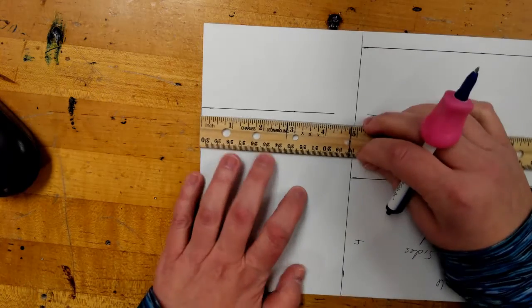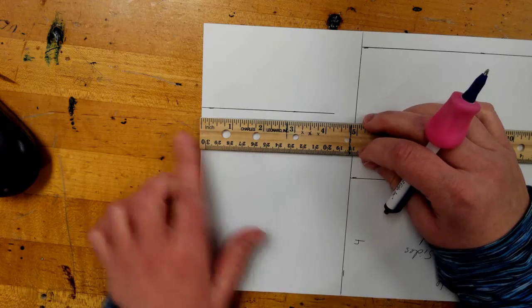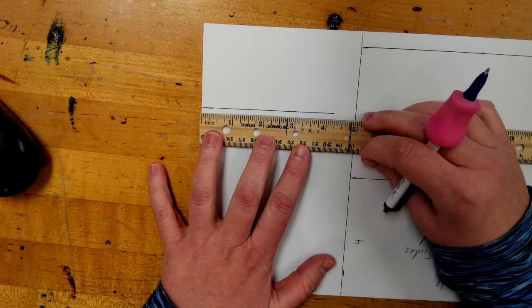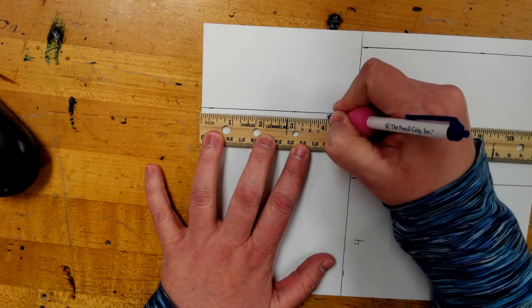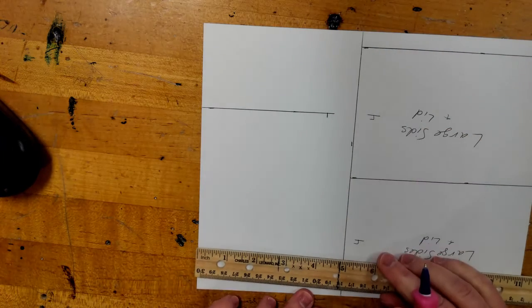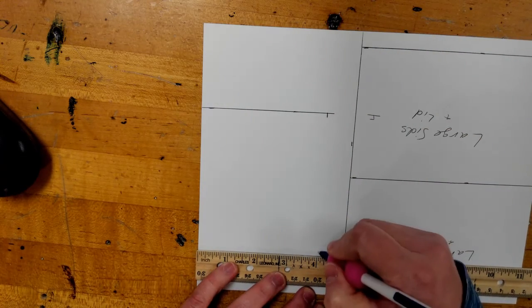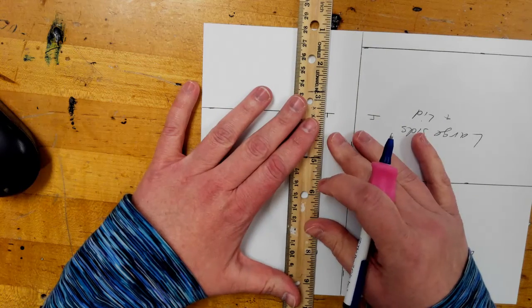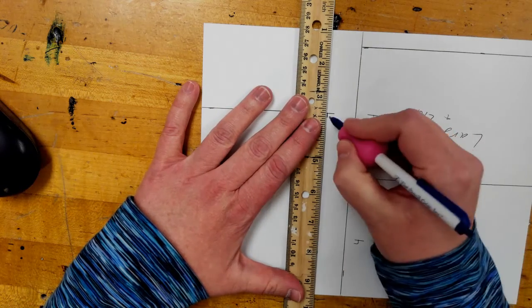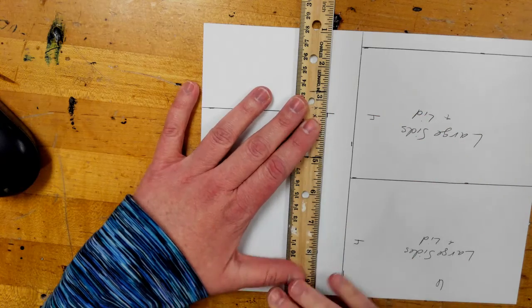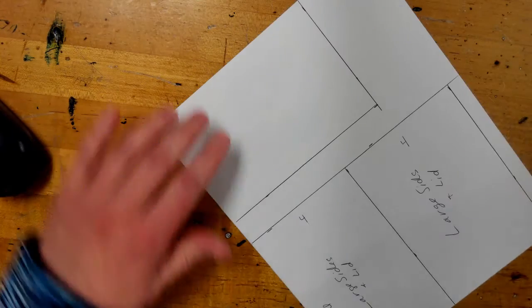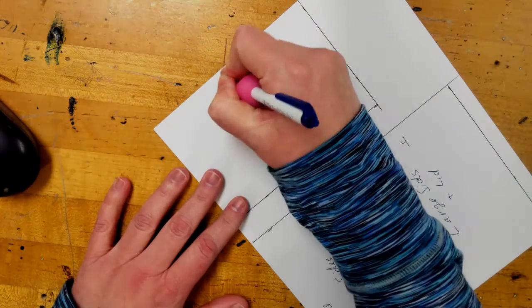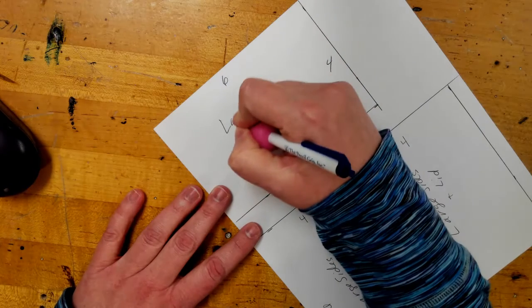And then I'm going to measure four inches over from the side. So, zero on the edge, mark above four, bring my ruler down, do the same thing. Turn my ruler, match up those points, draw in my line, and then label it. So, this is four by six, and this is the larger size.